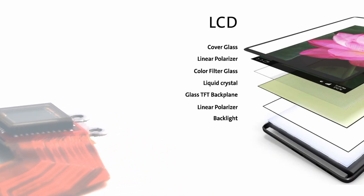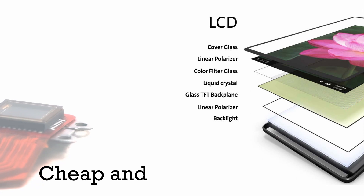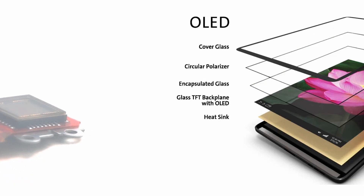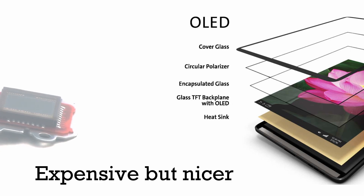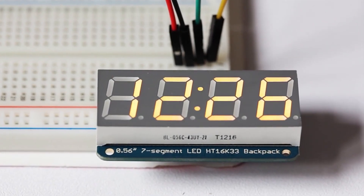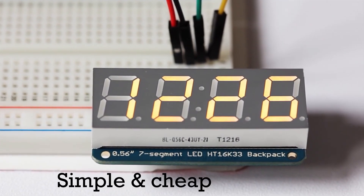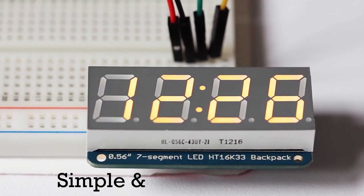The most common modern displays include liquid crystal displays (LCD), which are quite cheap and reliable over a longer period of time; light emitting diode displays (LED), which are more expensive but provide a nicer picture quality; and segment displays, which are very simple and cheap displays usually used in scenarios where only a couple of symbols need to be shown.